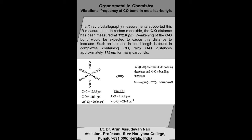This decrease in the CO stretch can be supported by X-ray crystallographic measurement. In free carbon monoxide, the free CO bond length is measured at 112.8 pm. Weakening of the CO bond would be expected to cause this distance to increase. Such an increase in bond length is found in complexes containing CO, with CO distances of approximately 115 pm for many carbonyls. For example, in hexacarbonyl chromium, the free CO bond length is 112.8 pm, whereas in the hexacarbonyl complex the CO bond length is 115 pm.